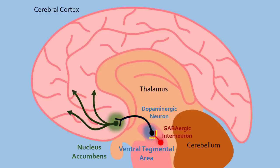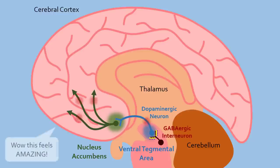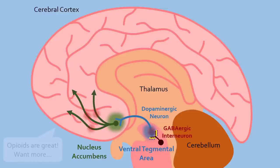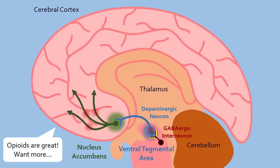However, these interneurons have opioid receptors, and when opioids bind to them, the interneuron no longer releases GABA. Without that brake, dopaminergic neurons freely release dopamine, which activates the reward pathway to induce pleasure. After repeated use of opioids, the association between pleasure and opioid use is formed — termed drug-liking — which is what drives opioid use in the early stages of opioid use disorder.